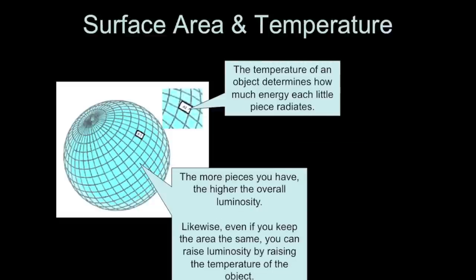The bigger the temperature, the more the radiation that will occur at a given spot on the surface. So if you wanted to change the luminosity of an object, you could keep the area the same, but you just have to raise its temperature.